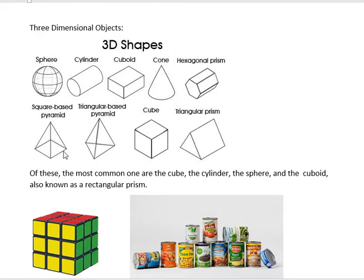A square base pyramid. A pyramid that has the bottom of it is a square and then the sides, the four sides, come up to a peak.